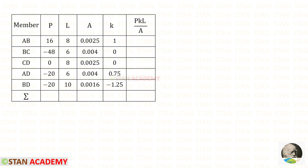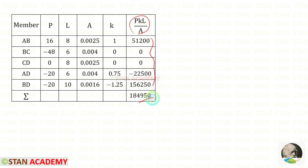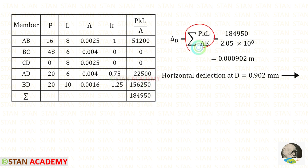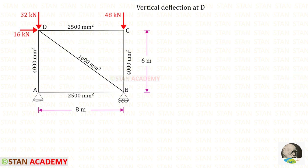The values of P, L, and A were already found in the previous step; we only have to enter the values of K. Then we find P·K·L / A for each member. After adding them and applying the formula and the given Young's modulus, we get the horizontal deflection at D = 0.902 mm. We got a positive value, meaning our assumption is correct — the horizontal deflection at D occurs towards the right side.